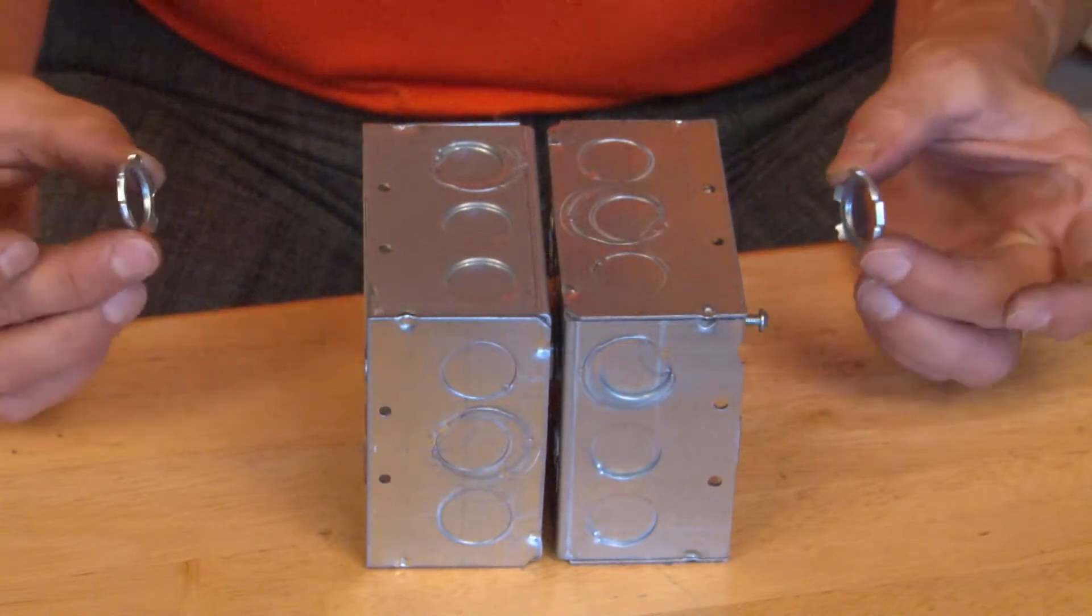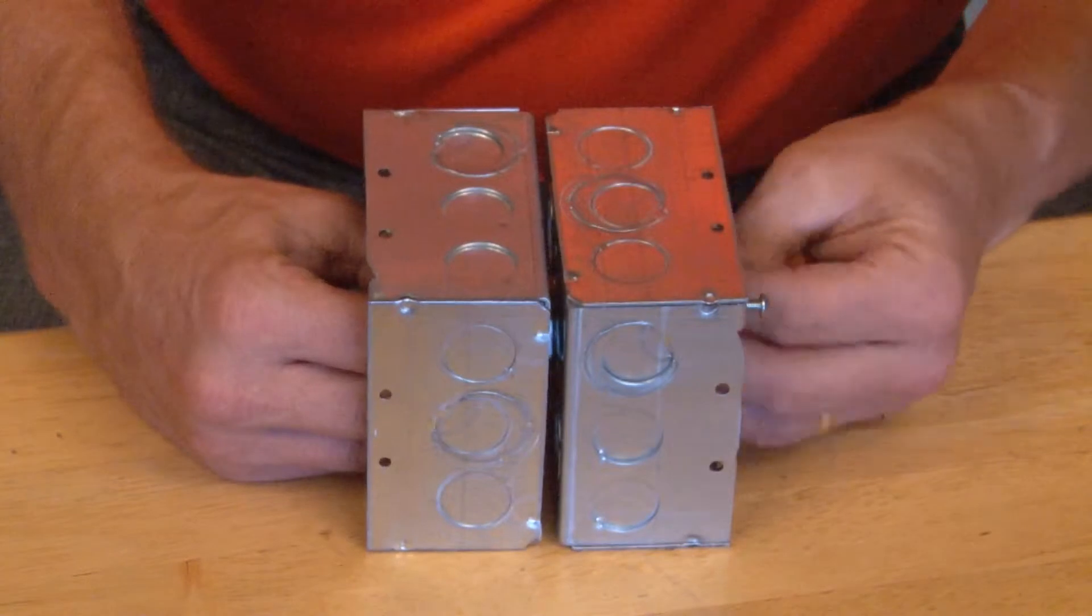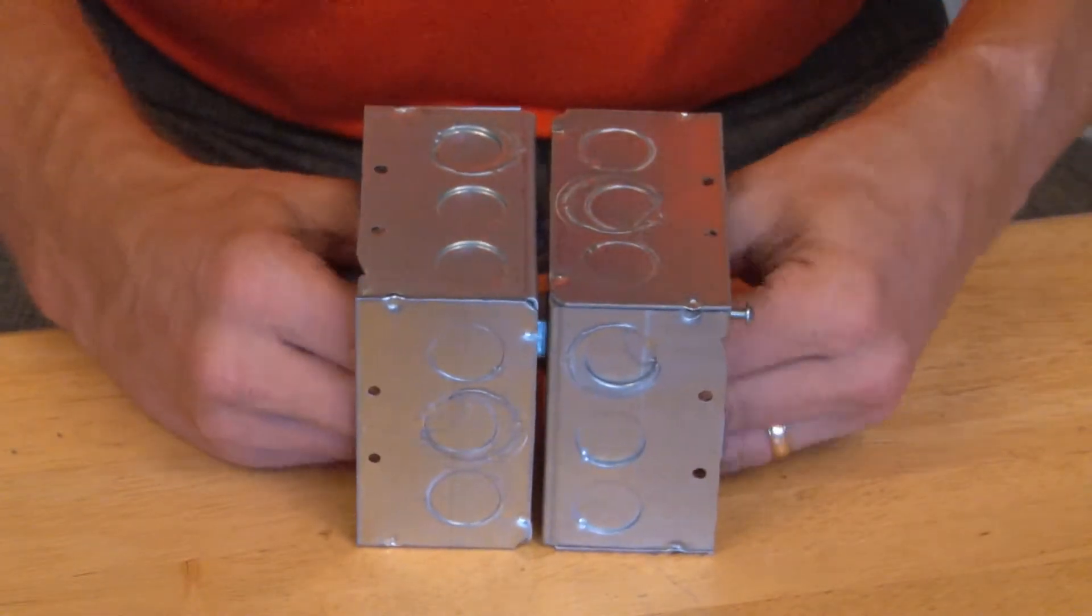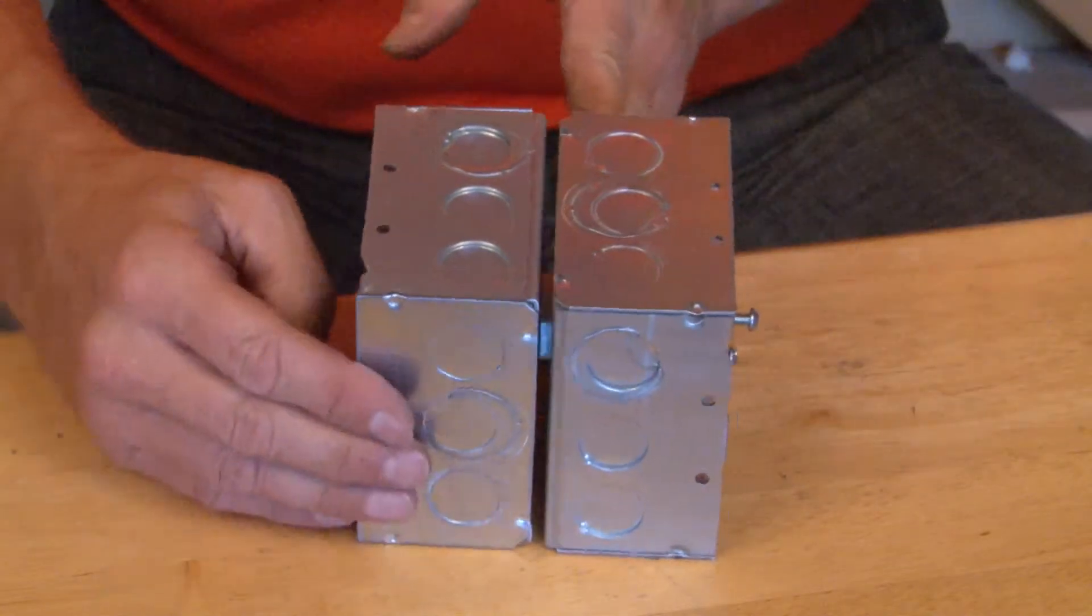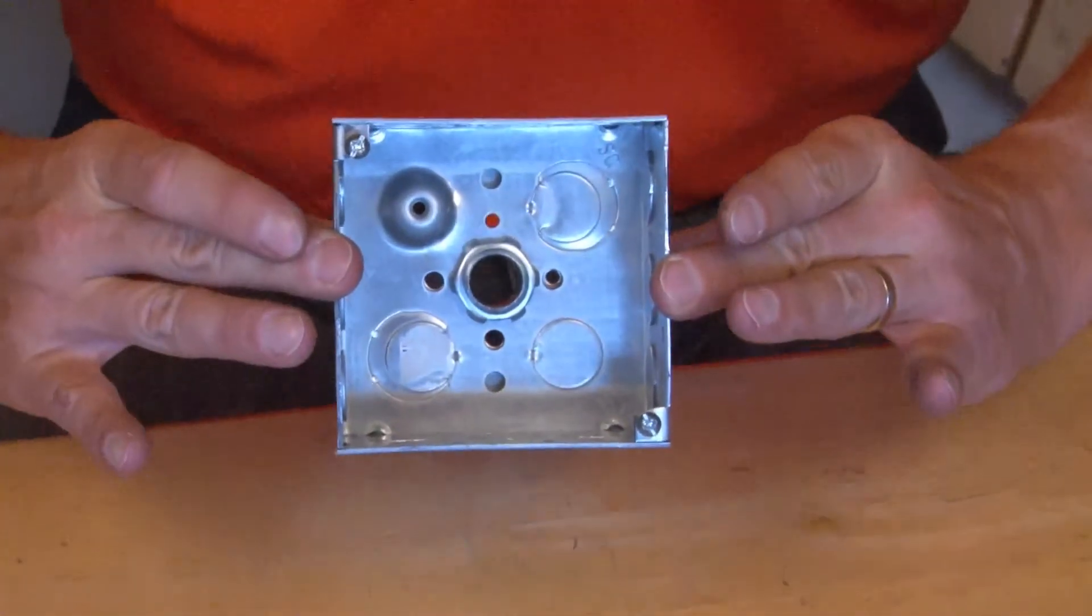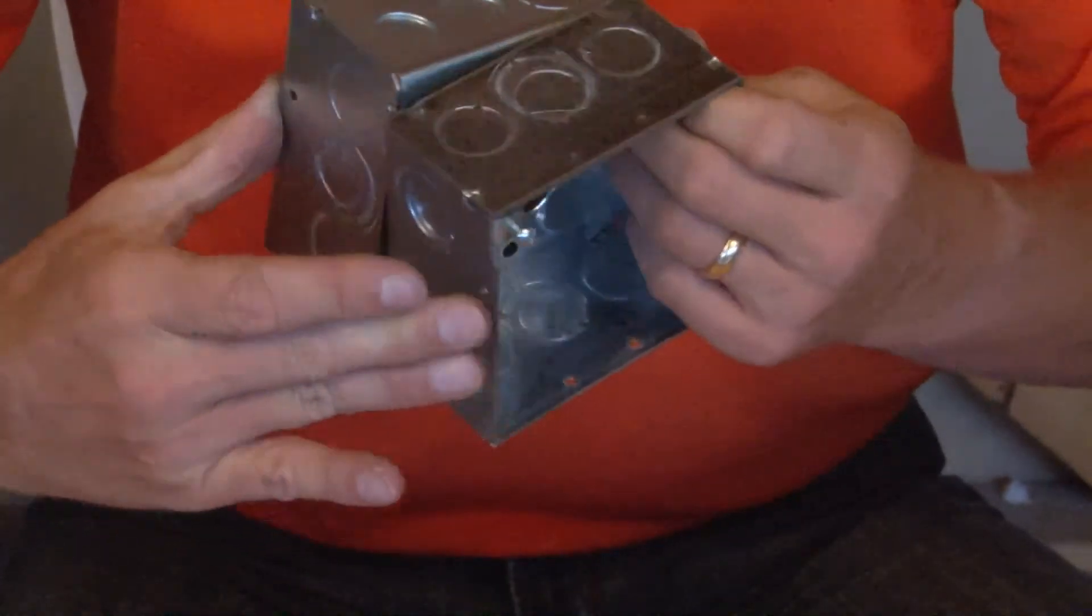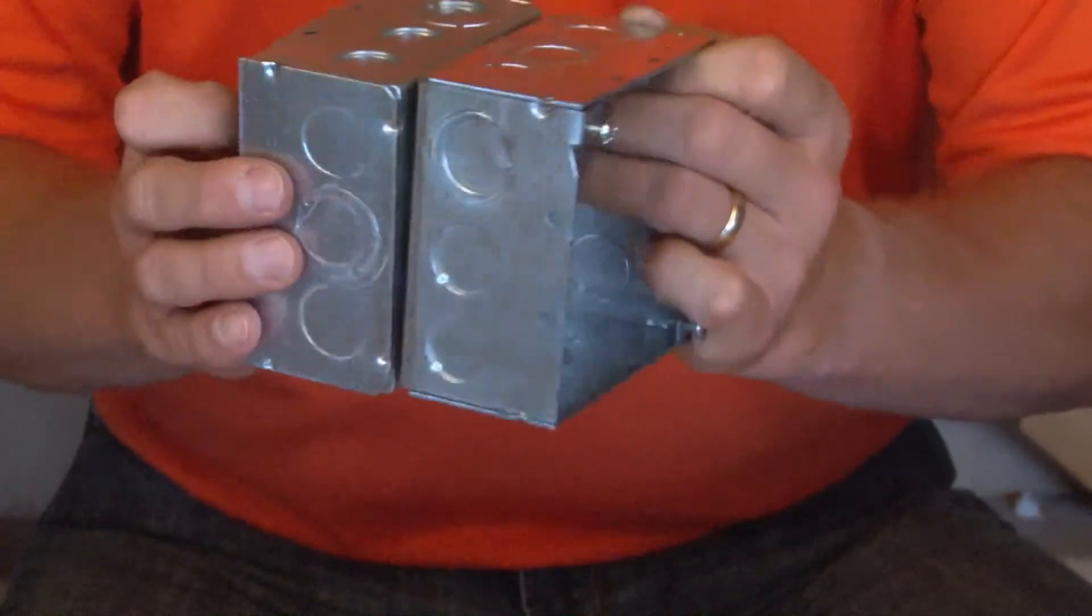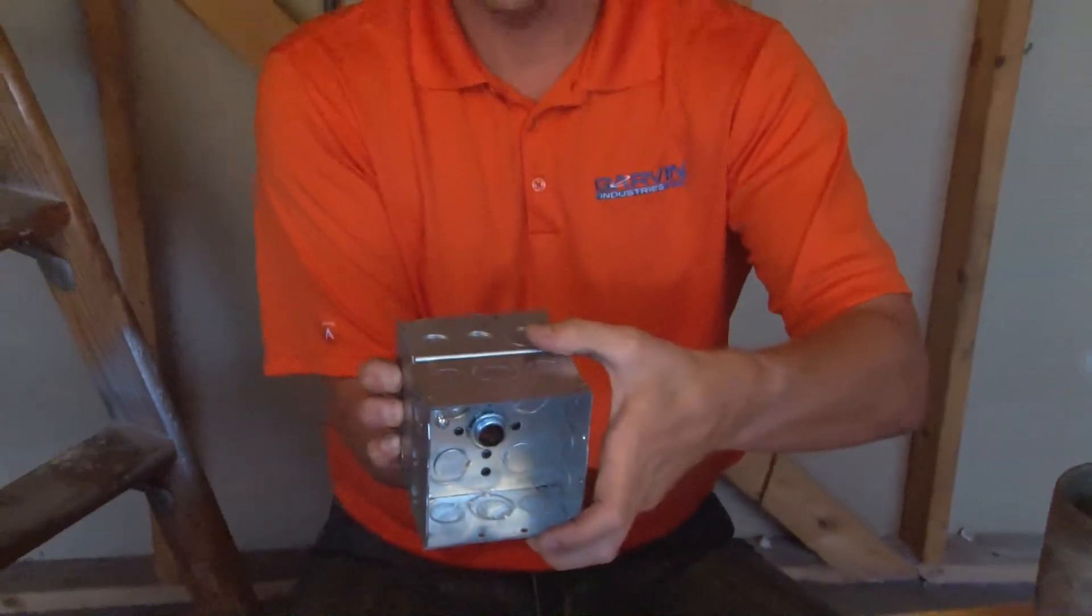You then can take the lock nuts, tighten them on the fitting on the inside, securing the boxes back-to-back and creating a pass-through from one box to the other. So wire can be pulled from one box on one side of the wall to the other.